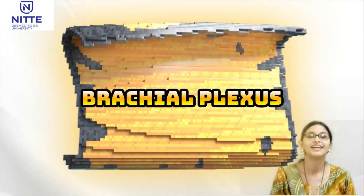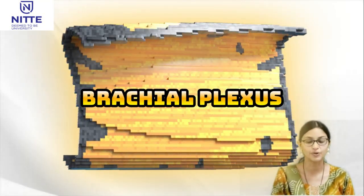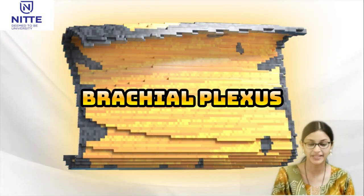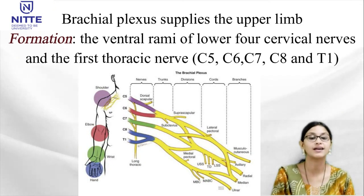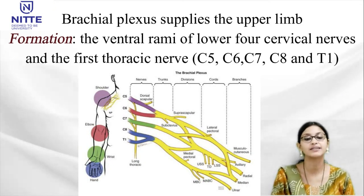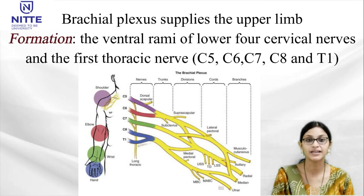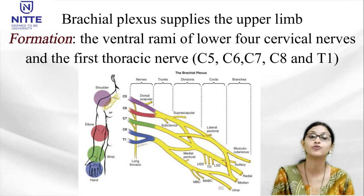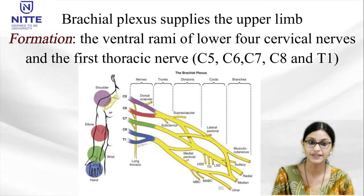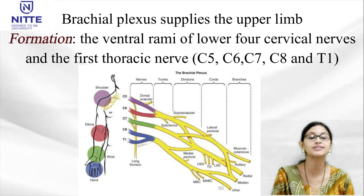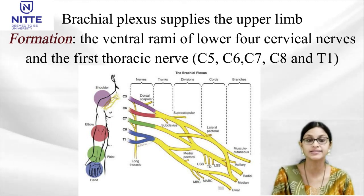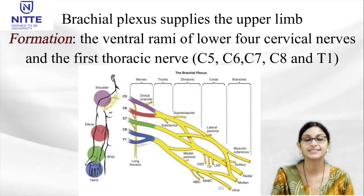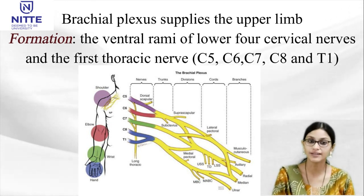In this video I am going to talk about brachial plexus. The brachial plexus supplies the upper limb and is formed by the ventral rami of lower four cervical nerves and the first thoracic nerve. So it is contributed by C5, C6, C7, C8 and T1 roots.